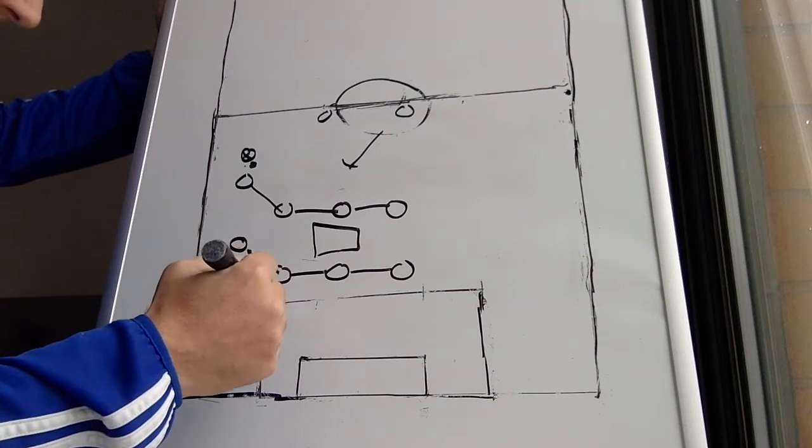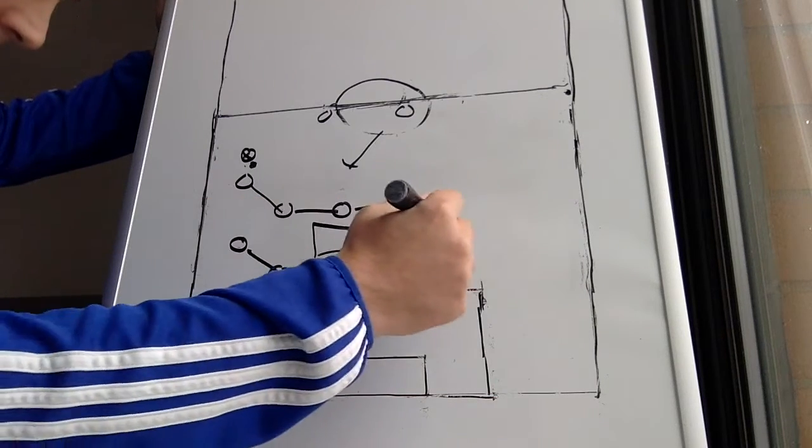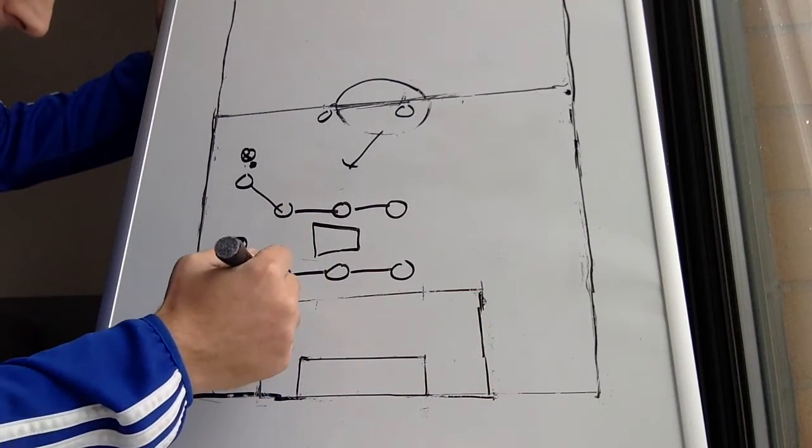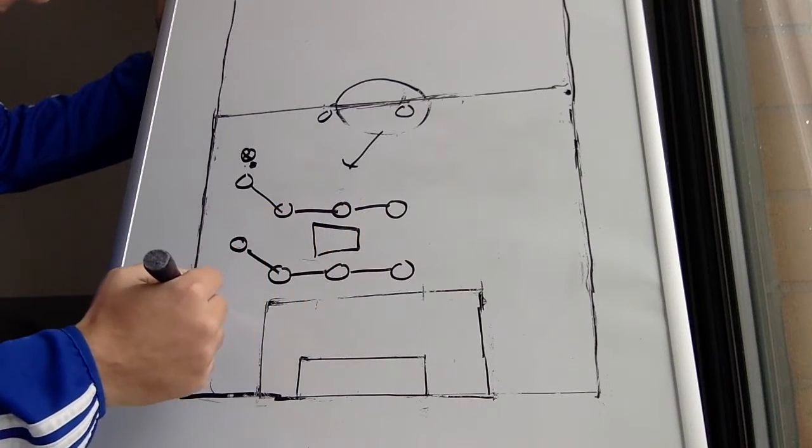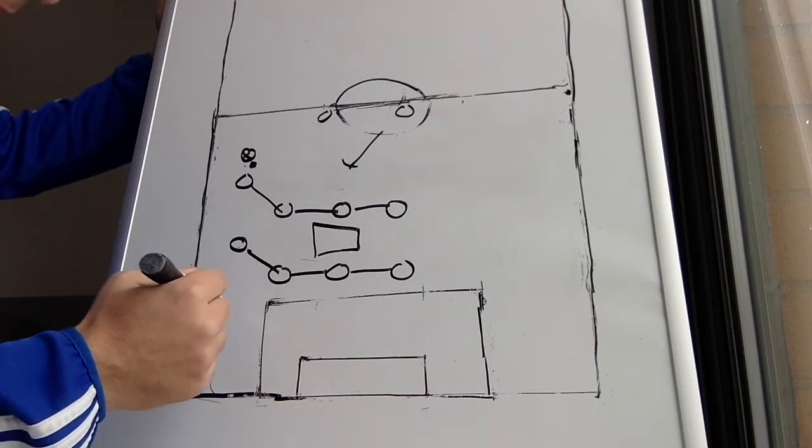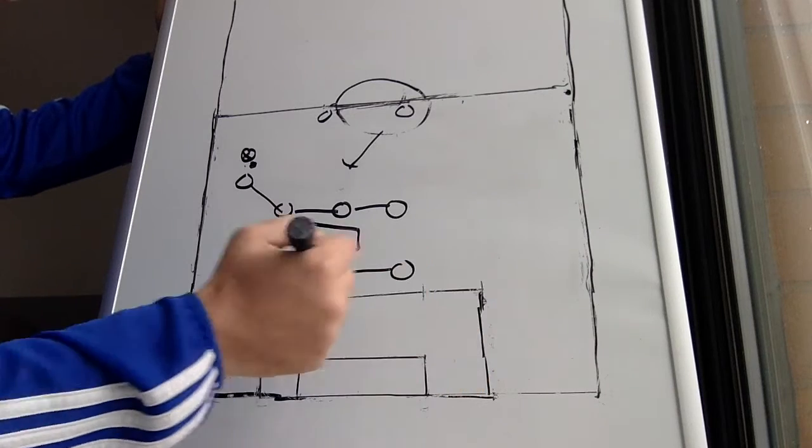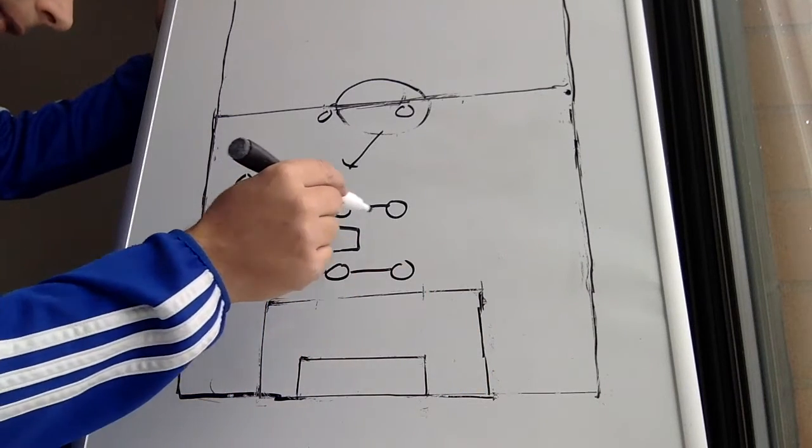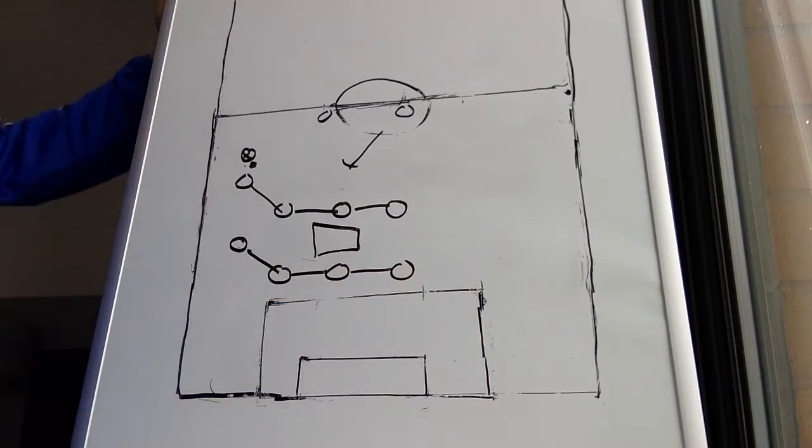Most goals are created and scored from here, a box on top of the box. Most assists come from this area. Out wide, people think that many assists come from out wide. Not even close to as many that come from on top of the box.